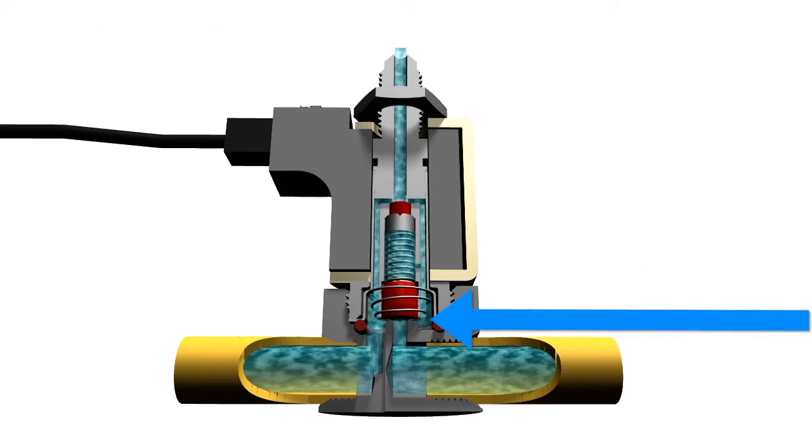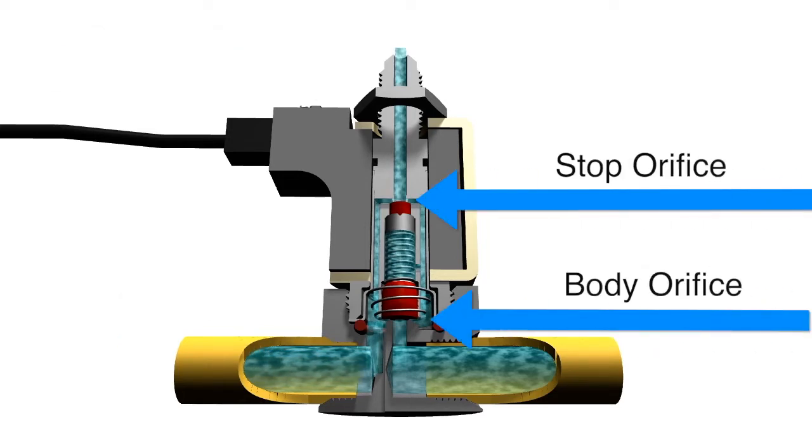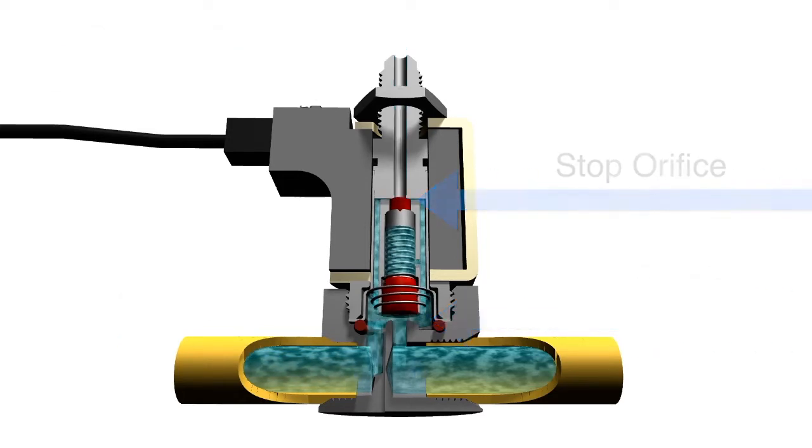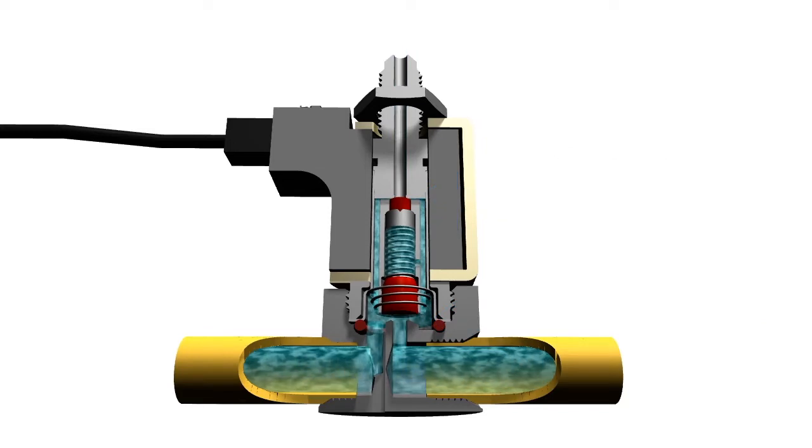It has two orifices, the body orifice and the stop orifice, one of which is always open. This allows for two paths of flow.